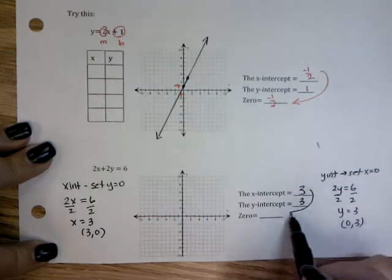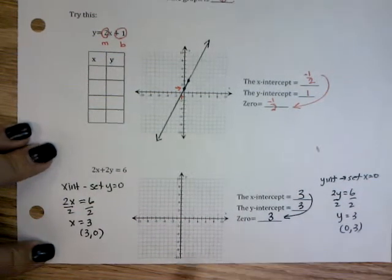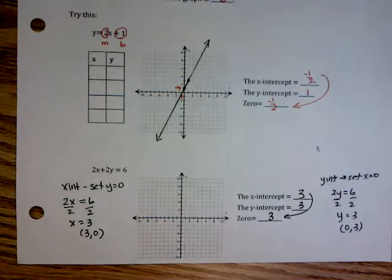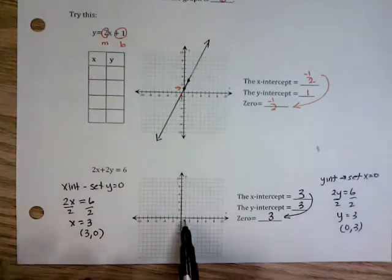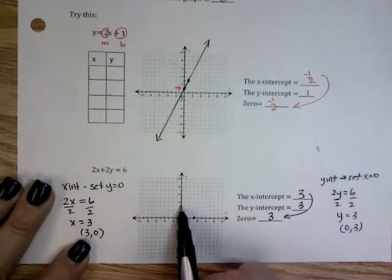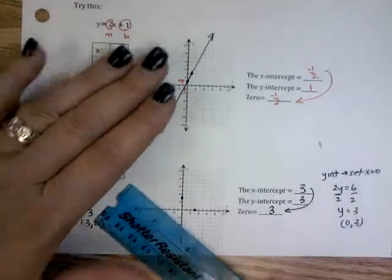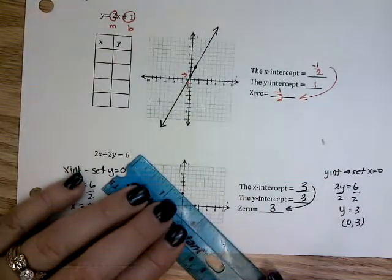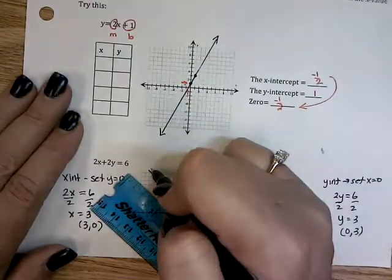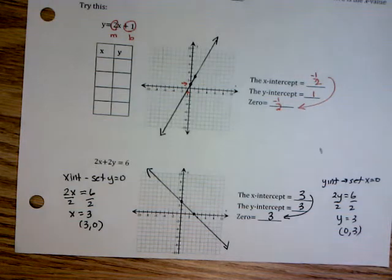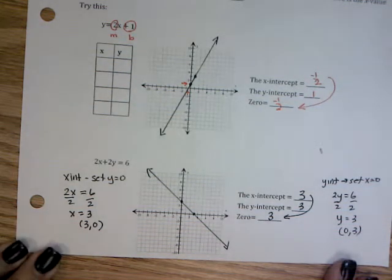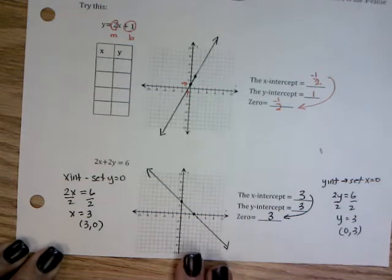So it is the point (0, 3). The zero of my graph is the same as my x-intercept. They are the same. I'm going to go ahead and finish out this problem and graph it as well just to get some graphing practice. My x-intercept was (3, 0), y-intercept was (0, 3).